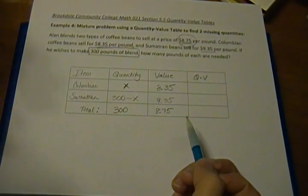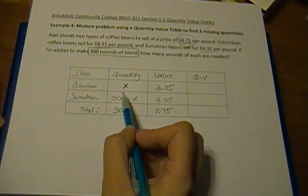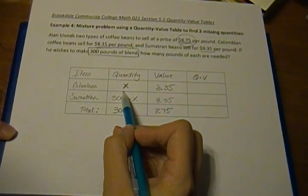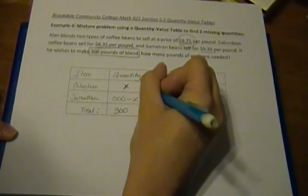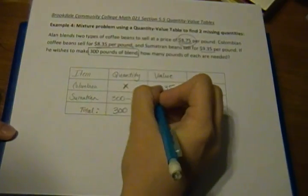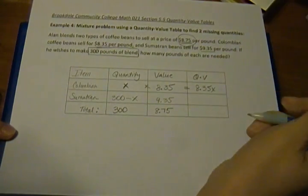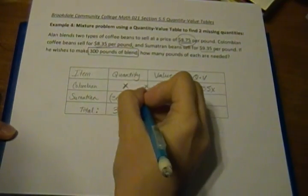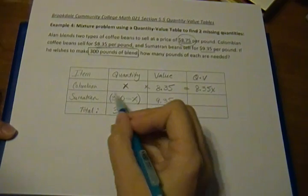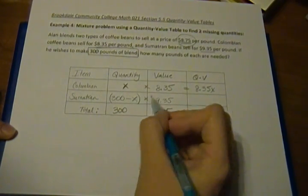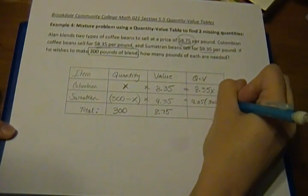So now we're going to set up and find our equation so that we can solve to find our X value, which is our Colombian, how many pounds of Colombian beans. And then once we have that, we can figure out how many Sumatran beans we need. So again, we multiply across. So the X times 8.35 is going to be 8.35X. And I always recommend you put parentheses around it when you're adding something here with an unknown, so 300 minus X, this quantity, times the 9.35. So that's going to be 9.35 times (300 - X) in parentheses.